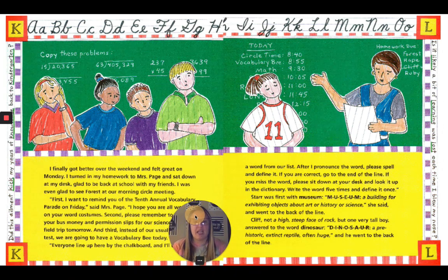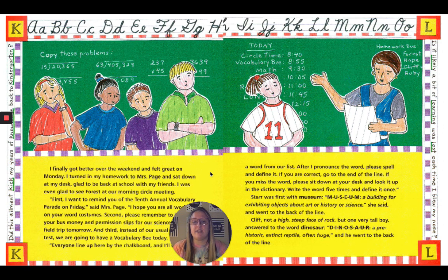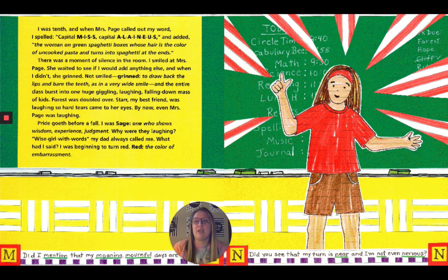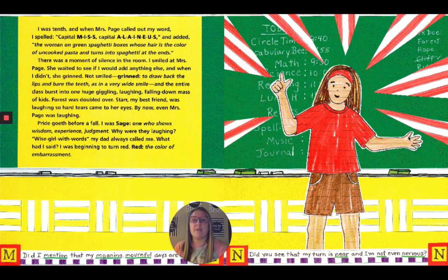"After I pronounce the word, please spell it and define it. If you're correct, go to the end of the line. If you miss the word, please sit down at your desk and look it up in the dictionary, write the word five times and define it once." Star was first with museum: M-U-S-E-U-M, a building for exhibiting objects about art or history or science. Cliff, not a high steep face of rock but one very tall boy, answered to the word dinosaur: D-I-N-O-S-A-U-R, a prehistoric extinct reptile, often huge. I was 10th and when Mrs. Page called out my word, I spelled capital M-I-S-S, capital A-L-A-I-N-E-U-S, and added: the woman on green spaghetti boxes whose hair is the color of uncooked pasta and turns into spaghetti at the ends.